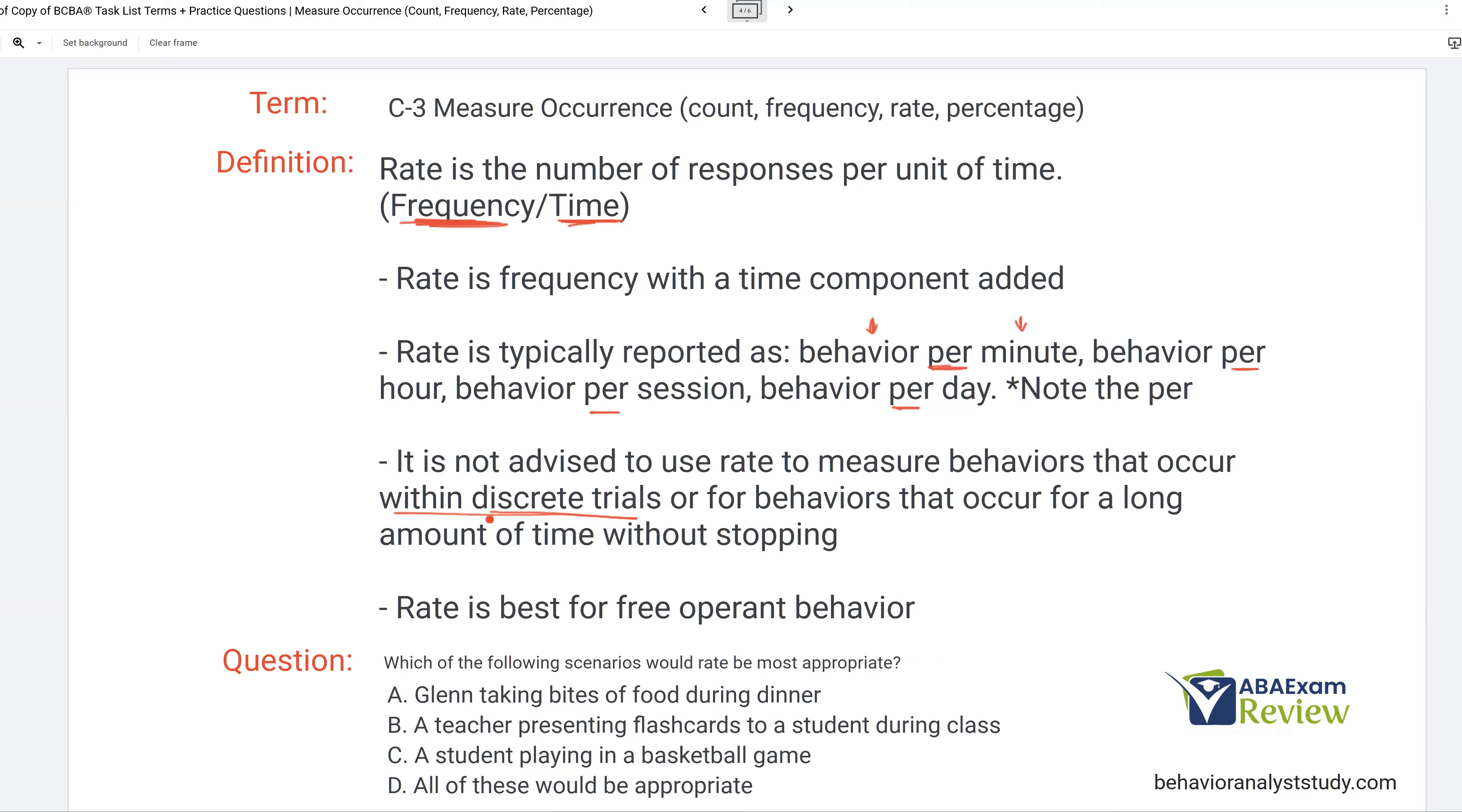So if you, let's say, are using flashcards with somebody, the problem with rate is somebody else is controlling, one, the presentation of flashcards, how often the flashcards are presented, how many. And so it's not going to get a true rate of that person's ability, right? Because there's a lot of variables outside of the control.